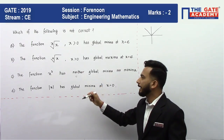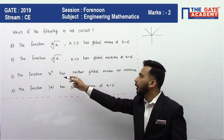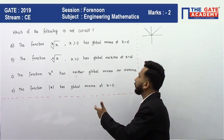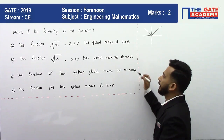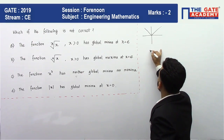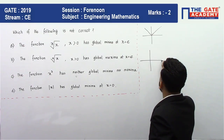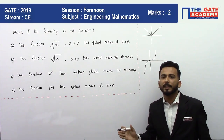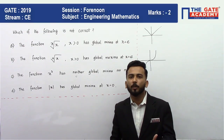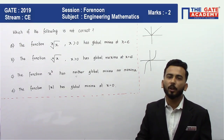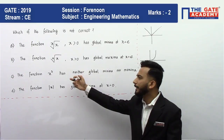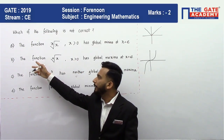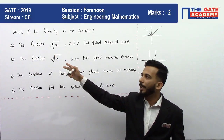Moving to option C: the function x³ has neither global minima nor maxima. If we plot the graph of x³, you can see it does not have any point of minima or maxima — that point is called an inflection point. So this option is also correct.